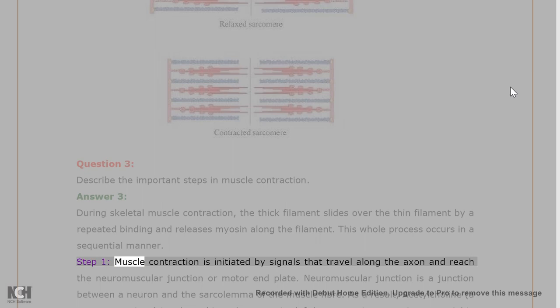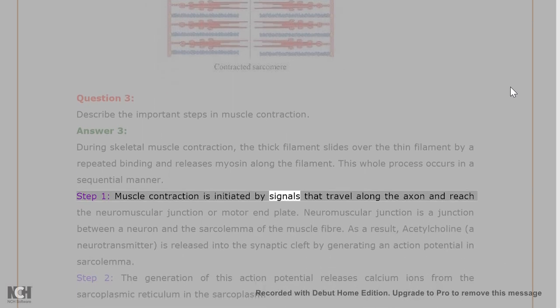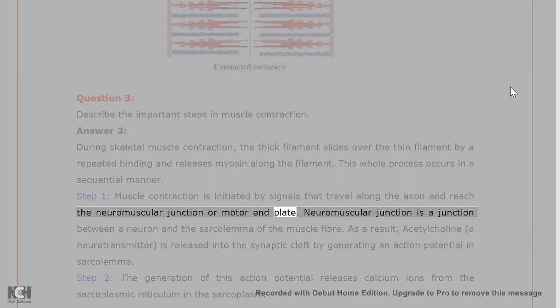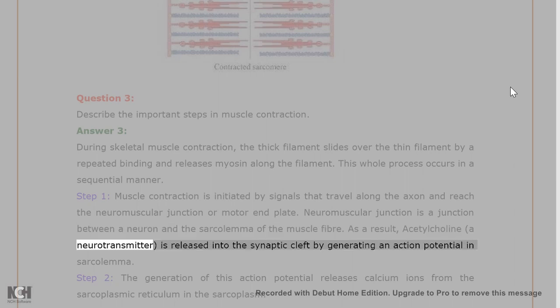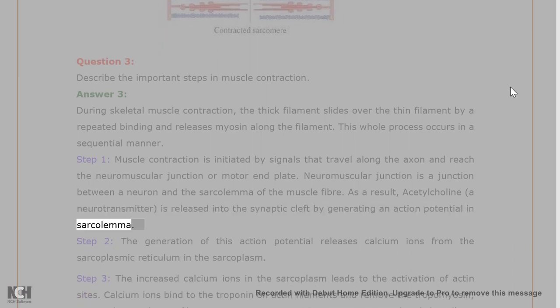Step 1. Muscle contraction is initiated by signals that travel along the axon and reach the neuromuscular junction or motor end plate. Neuromuscular junction is a junction between a neuron and the sarcolemma of the muscle fiber. As a result, acetylcholine, a neurotransmitter, is released into the synaptic cleft by generating an action potential in sarcolemma.